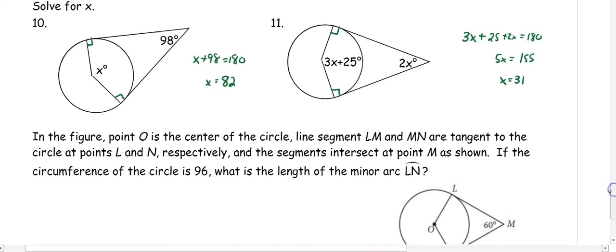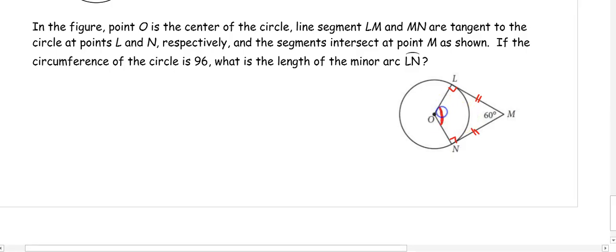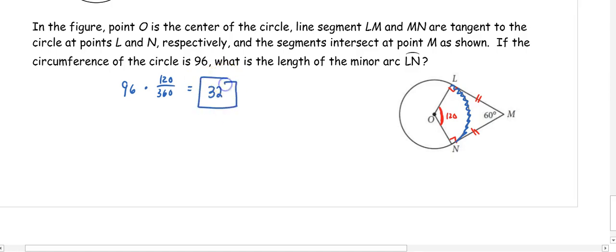The last problem is an SAT question. Point O is the center of the circle. Line segments LM and LN are tangent, so they are congruent and create right angles. The circumference is 96, and we want the length of the minor arc MN. Since the given angle is 60 degrees, we subtract from 180 to get the arc measure of 120 degrees. Arc length equals 96 times 120 over 360, which gives 32. So the length of the minor arc MN is 32.